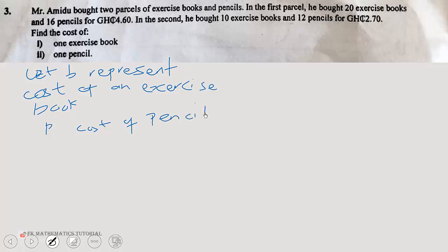Now if you buy 20 exercise books, the cost will be 20 times B, then plus 16 times P, and the total cost for that is 4.60 cedis. So we can call this our equation one.